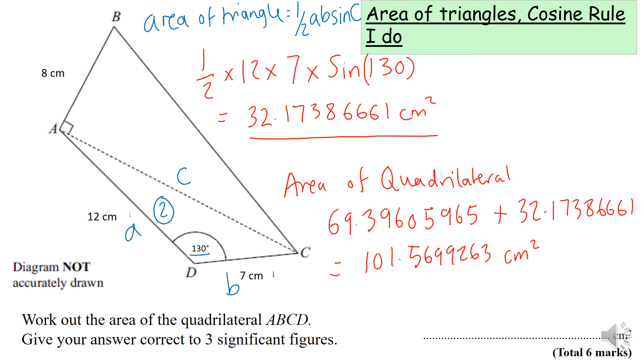The question says give your answer to three significant figures. I count from the beginning of my number unless it starts with a zero. One, two, three—the third significant figure would be after that. The number after the line is 5, so round up to 102 centimeters squared.